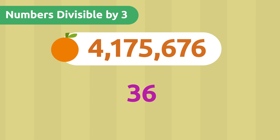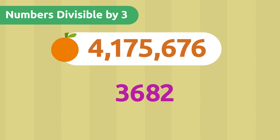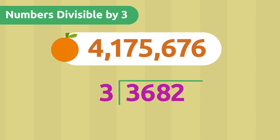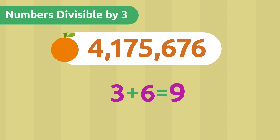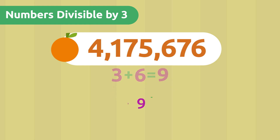But what happens if we add the digits of a number and we get a very large number? Doing division with such a large number would take us a long time, and what we want to know quickly is the divisibility of a number. In that case, after adding up the digits of the original number, we would go back and add again the digits of that result to get a smaller number. If we get a number divisible by 3, then the original number should also be divisible by 3.